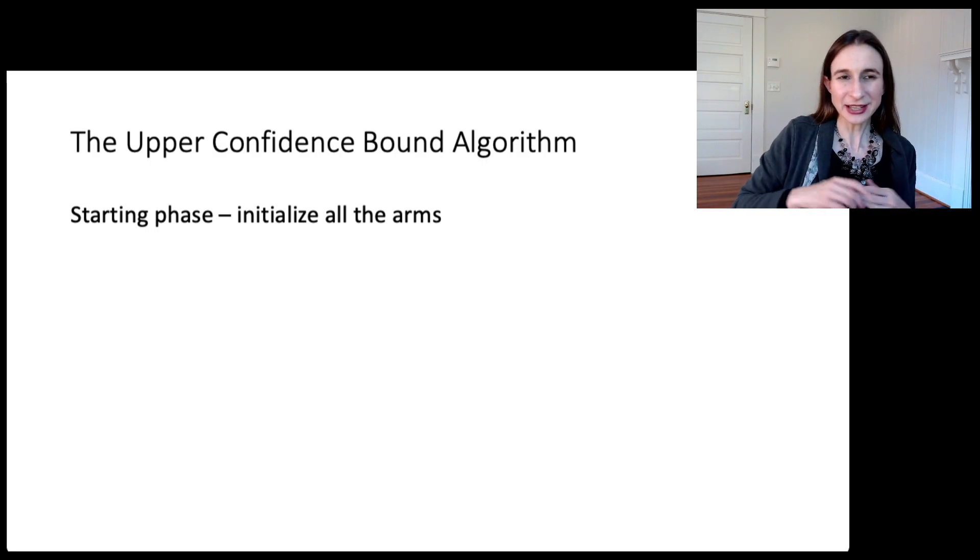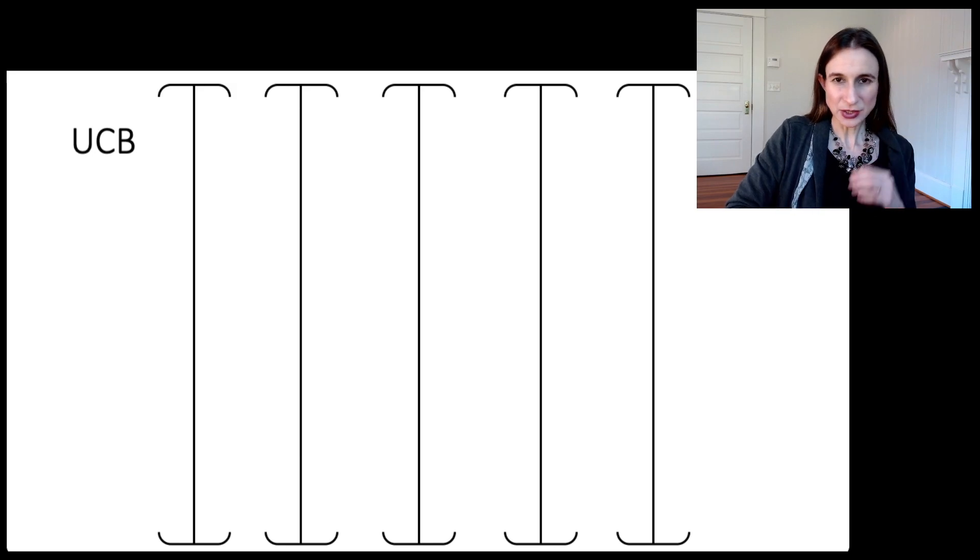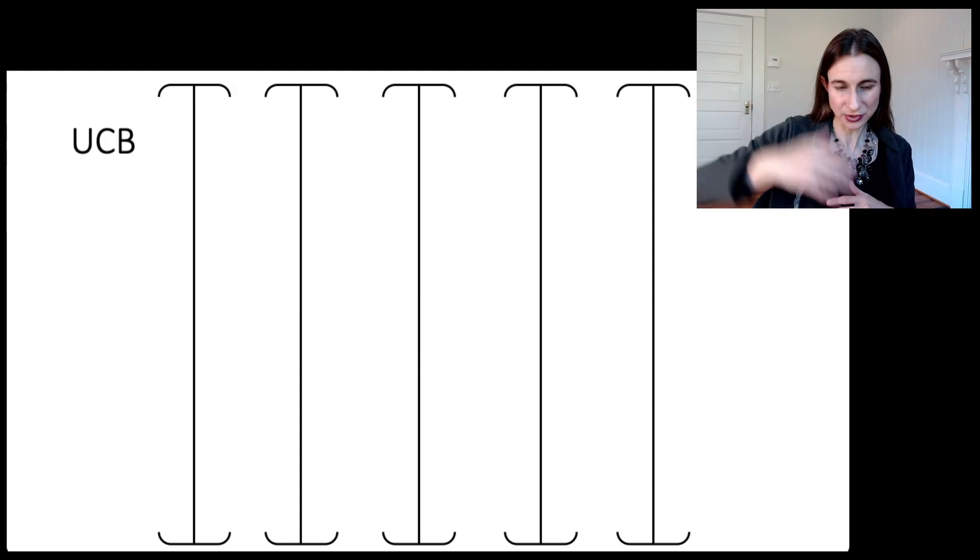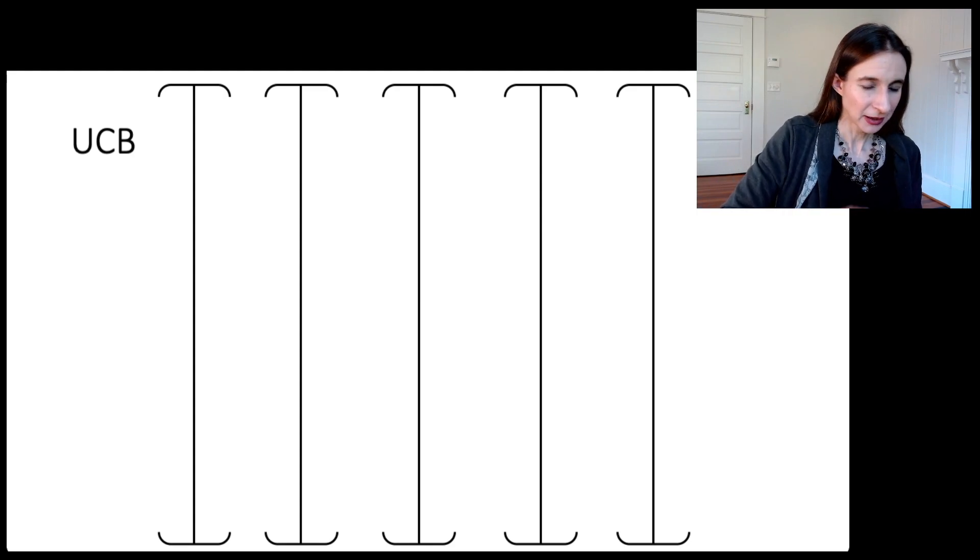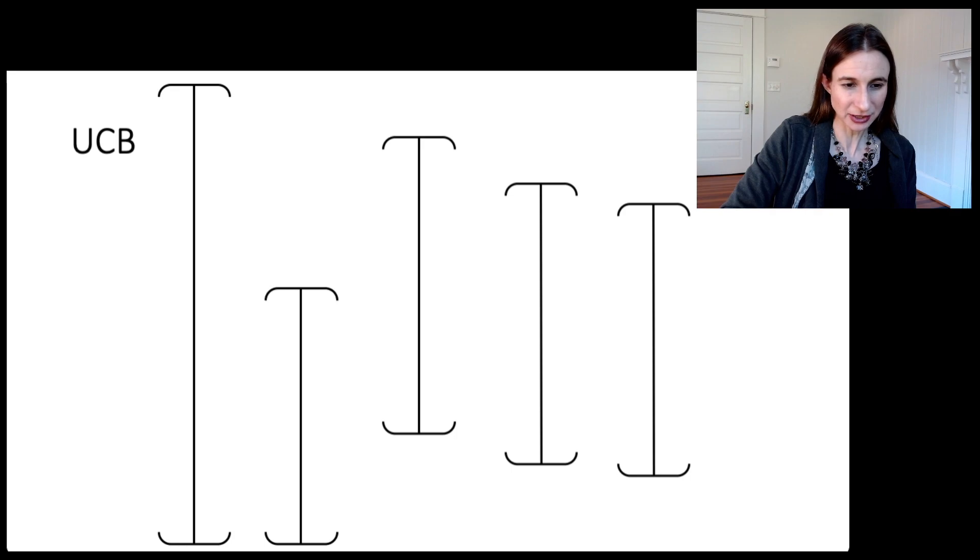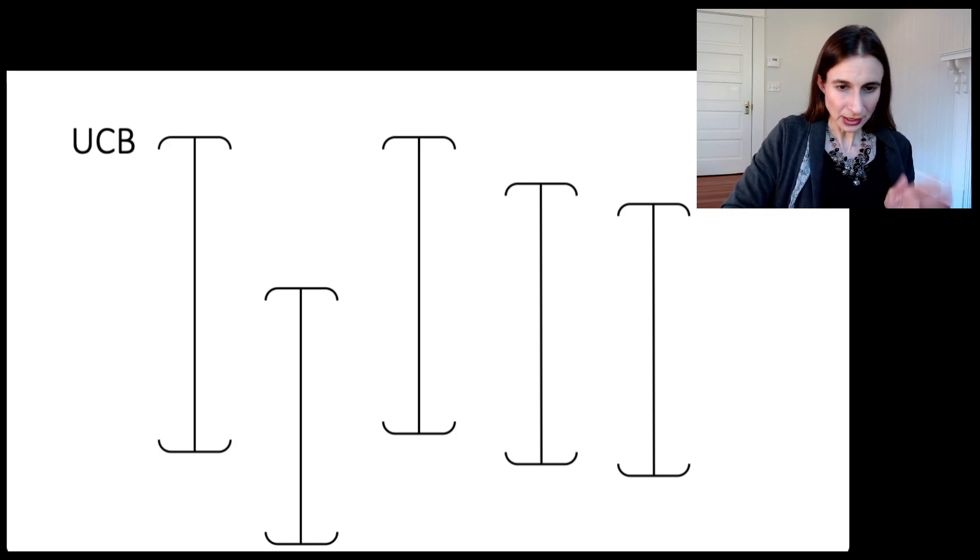In doing so, you get some idea, just some sort of baseline for the rewards for each of the arms. This is the starting phase of UCB. So we have five arms. Let's pull all of them once. We have confidence intervals for each arm that are very, very wide because we don't know anything about these arms. So we start with these super wide confidence intervals. We pull all the arms once and we learn something about the rewards for each arm. That's our starting point.